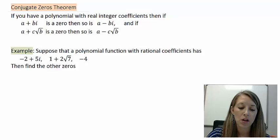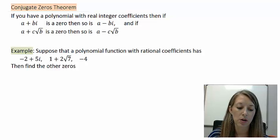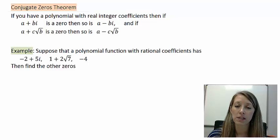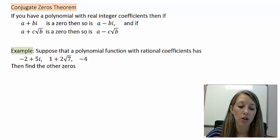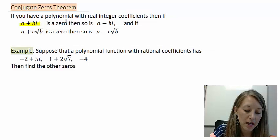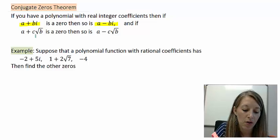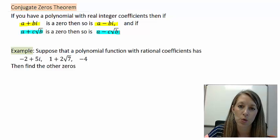This is the conjugate zeros theorem, and it basically says if you have an imaginary or a root as an answer, then you must have the conjugate as the answer as well. So if you have a plus bi, then you must have a minus bi, and vice versa. If you have a plus c root b, then you must have a minus c root b. These are called conjugates because they are exactly the same except for opposite middle signs. And it works the same for imaginary numbers as it works for square roots.